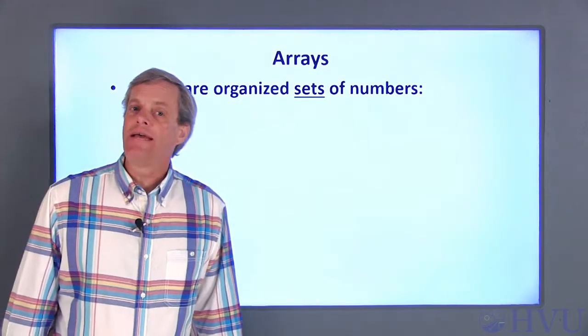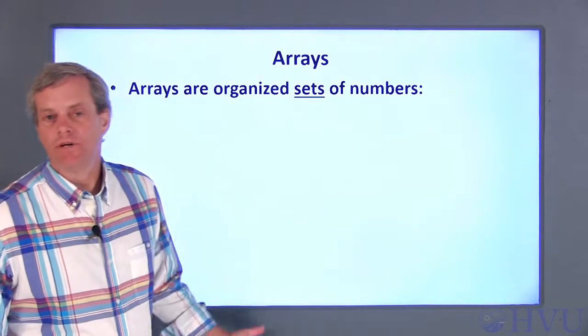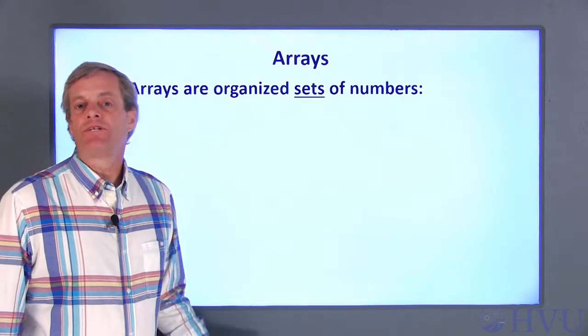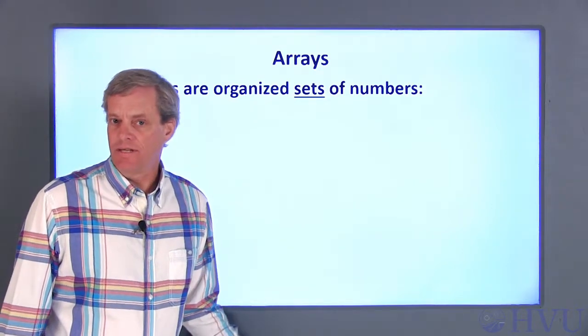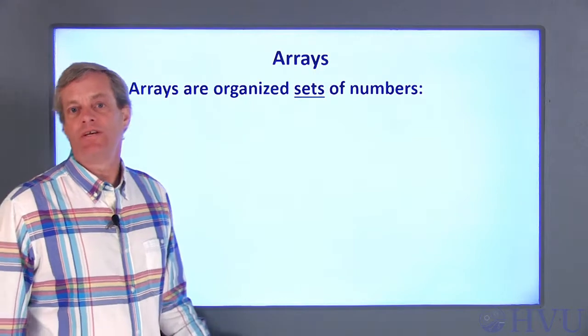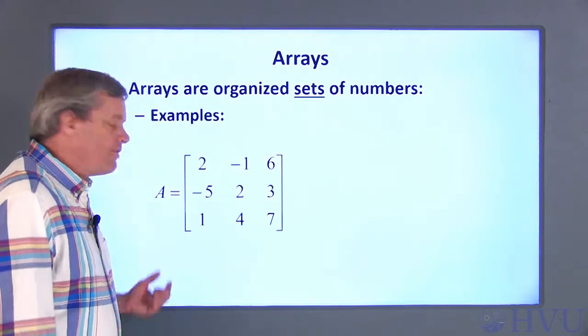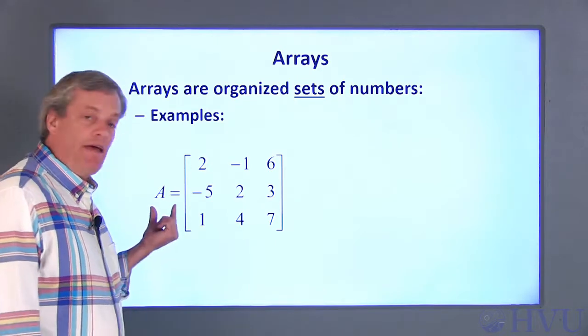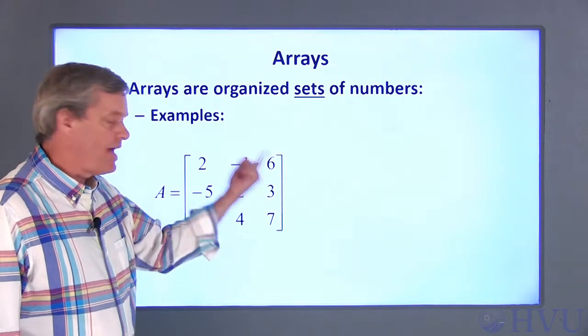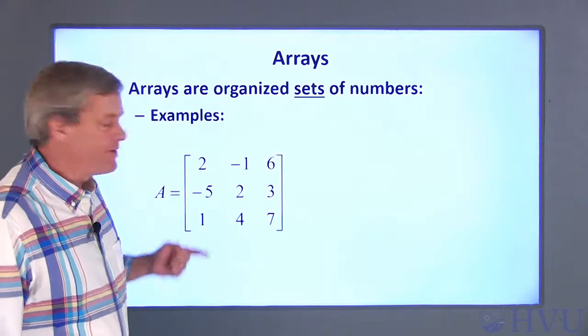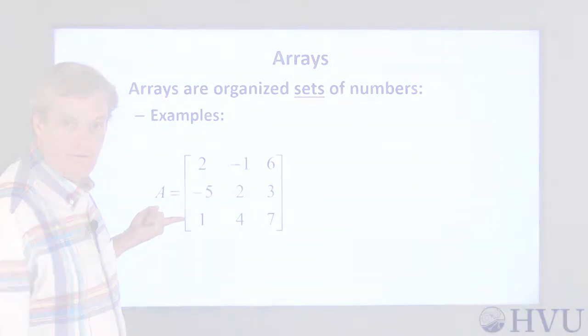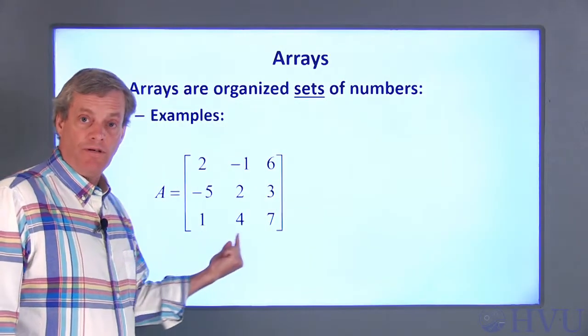The variable contains many numbers which form a logical grouping. An array is a single variable which contains a bunch of numbers. These numbers can be used as a group when that makes sense, or individual numbers can be extracted from the array. For example, this array named A contains nine numbers organized in three rows and three columns.